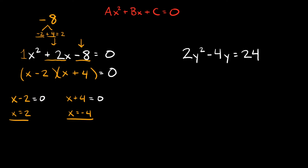If you want to check your answers you can do that. Let's check x = 2 first by plugging it into the factored equation. We get (2 - 2)(2 + 4) = 0 × 6 = 0. Is 0 times 6 equal to 0? Yes it is.